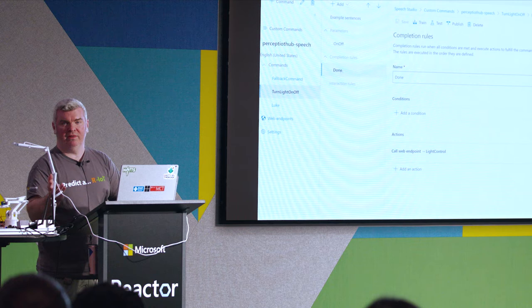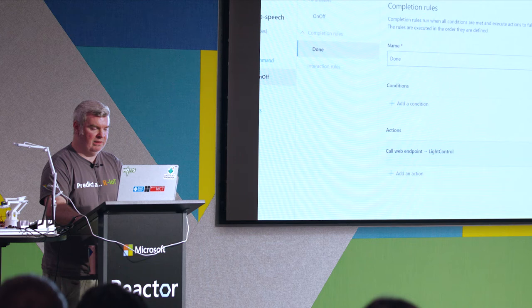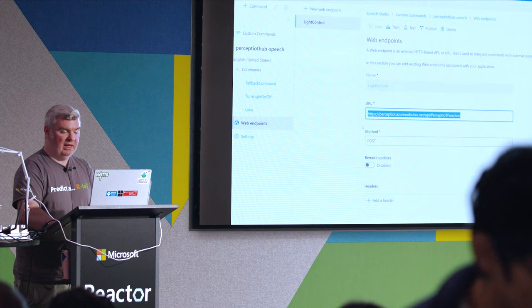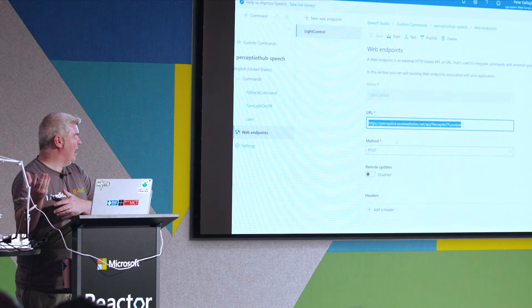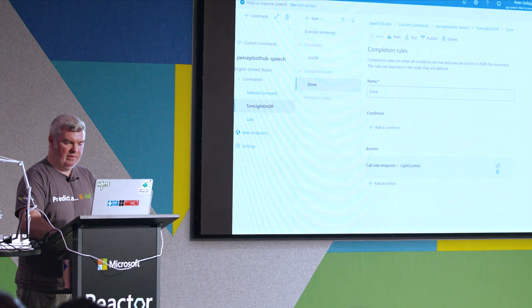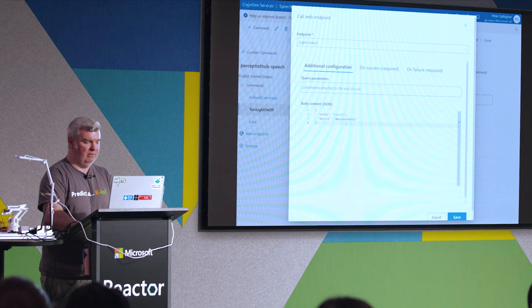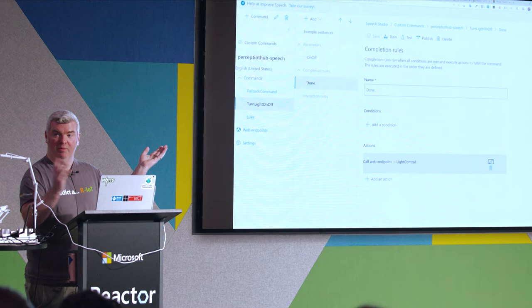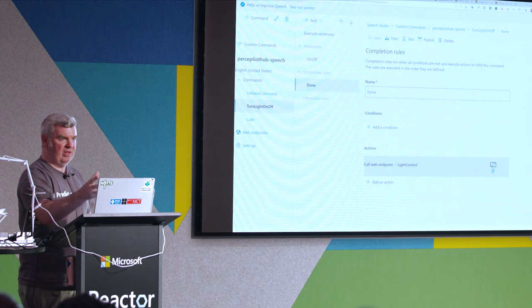When it's done, you can see I'm calling in to a web endpoint — this is how we get out to the Azure function. We've got web endpoints over here on the left, and it just calls into the URL that the Azure function gives you. You need to post some data to it to tell it which device to turn on and off, and whether it's on or off. In the done rule, I just send it a little bit of JSON with the state and which device I'm controlling. Pretty simple — not a whole heap in there. Once you've done it, you save it, train it, go back and assign it like I showed you, and it appears on the device.